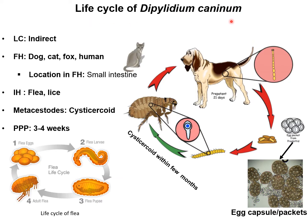The life cycle of Dipylidium caninum is indirect. The final hosts are dog, cat, fox, and occasionally humans. The parasite lives in the small intestine. The intermediate hosts are different fleas and lice found in the body coat of the dog. The infective stage is the cysticercoid. Time required for the completion of this life cycle is around three to four weeks. The parasite lives in the small intestine of the final host and produces gravid proglottids.